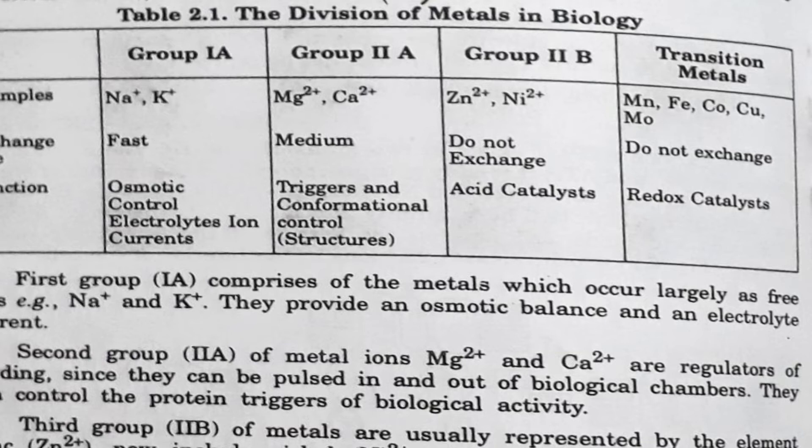The second group comprises metal ions such as magnesium and calcium, which are regulators of binding. Since they can be pulsed in and out of biological chambers, they can control the protein triggers of biological activity — we will study the magnesium-calcium pump in detail. The third group comprises metals usually represented by zinc, nickel, and iron ions.